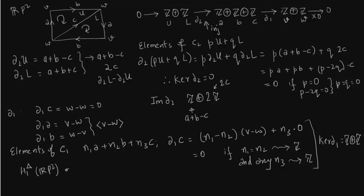So what is H1? This is kernel of delta 1 over image of delta 2. What is kernel of delta 1? We have just seen it as Z plus Z generated by C and A plus B. N3 is C and here it is A plus B.